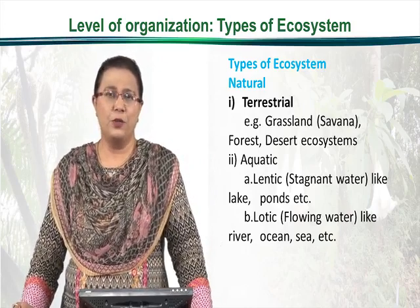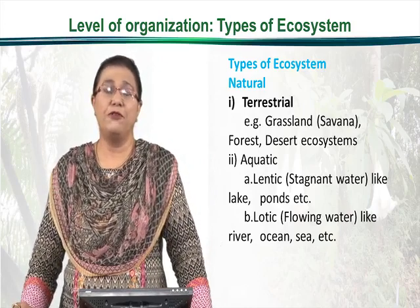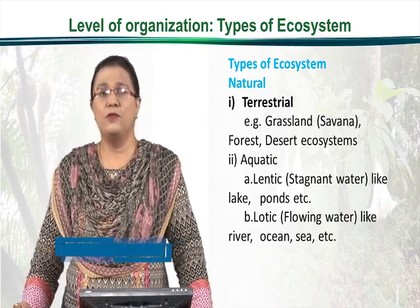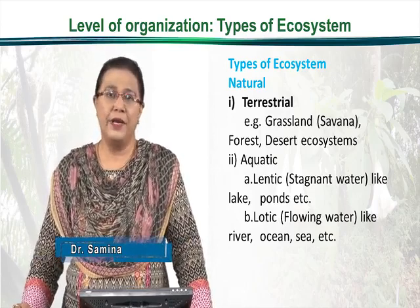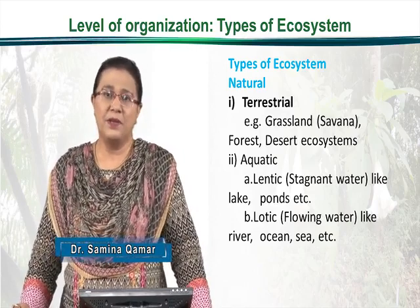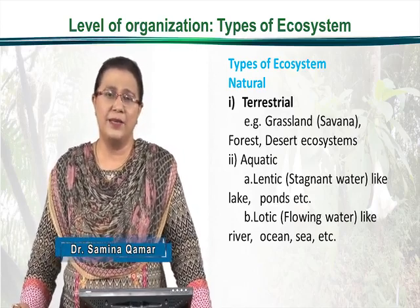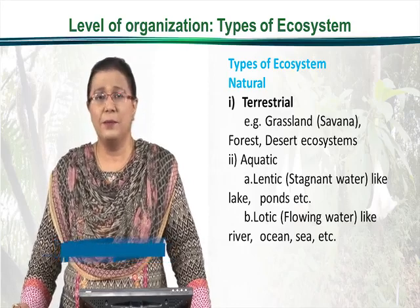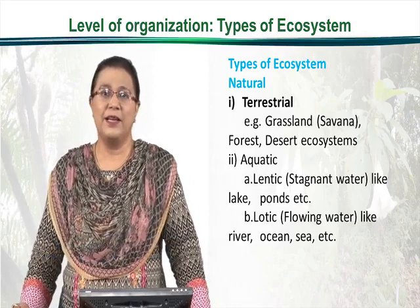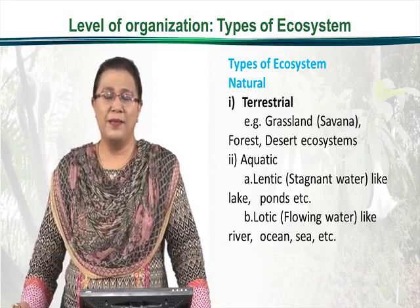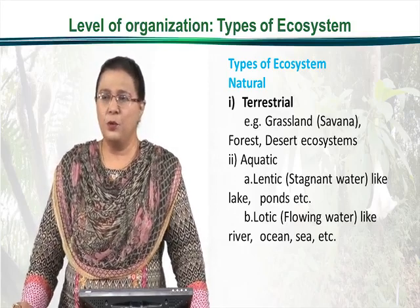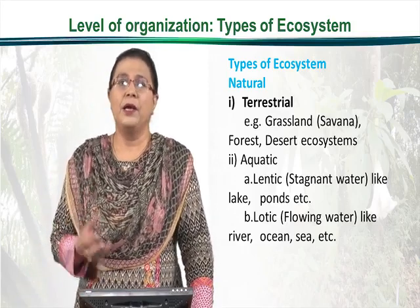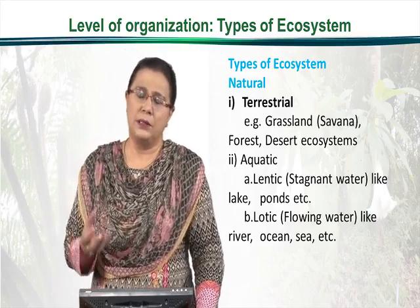In the case of terrestrial ecosystems, there is a variety. The grassland can be an ecosystem — the savannah grassland in Africa is the best example, the pampas grassland in Argentina is another example, and the grassland in Balochistan is another example. All these are grassland ecosystems.